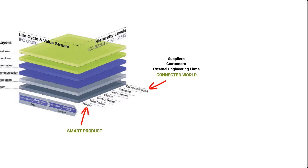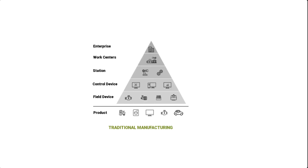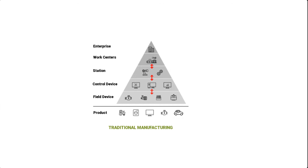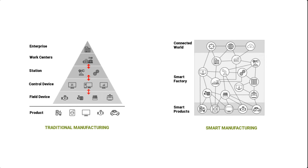However, unlike in a traditional pyramidal system architectural structure, whereby components only communicate with other components when their levels are next to each other, in RAMI 4.0, components are able to connect with other components from any level, and thus form a network structured architecture. This is what sets the stage for smart manufacturing, because then all the components would be able to gather information from other components at any given time, and go on to autonomously reconfigure, adapt, and optimize themselves accordingly.